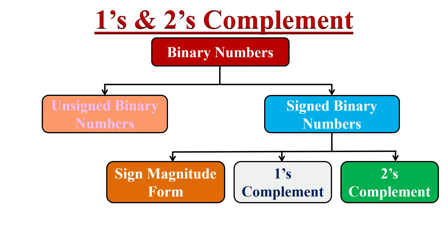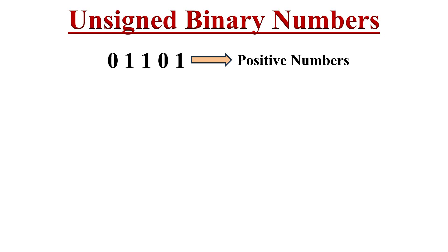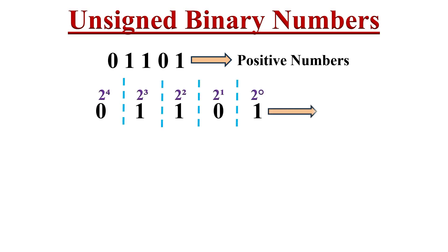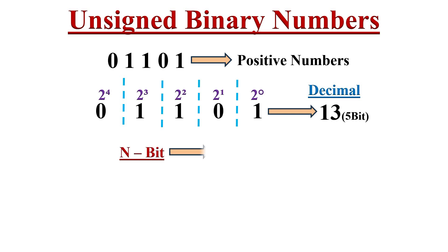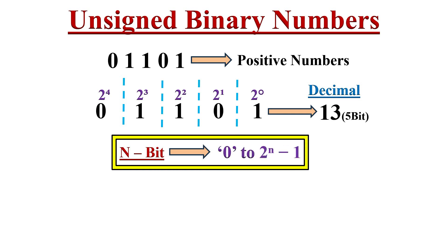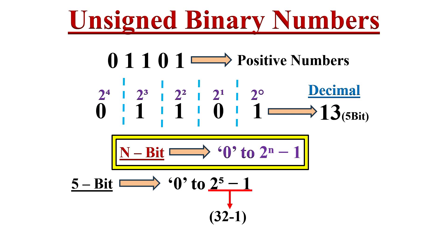By using unsigned binary numbers, we can only represent positive numbers. For example, 01101 represents the decimal value of plus 13 in 5-bit, where 2 to the power of 0 to 2 to the power of 4 are the weights of each bit. If you use n bits to represent a decimal number, the range is 0 to 2 to the power of n minus 1. Using 5 bits, we can represent numbers from 0 to 31.